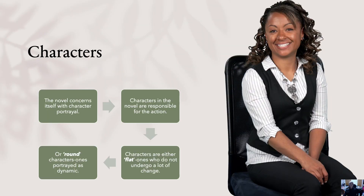A story cannot exist unless there are characters — not even a plot can exist without characters. The novel concerns itself with character portrayal. The characters in the novel are responsible for the action; they drive the story and drive the plot. We have two types of characters. One type is referred to as flat characters — those who do not undergo a lot of change; they are very static. Then we have round characters, which are portrayed as dynamic. Great changes happen in these characters, and more is written and described about them.